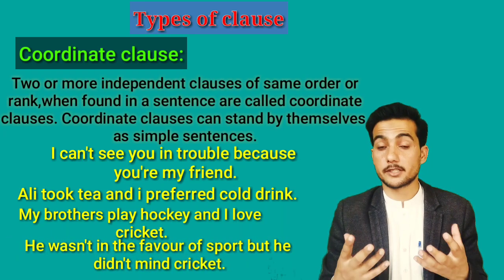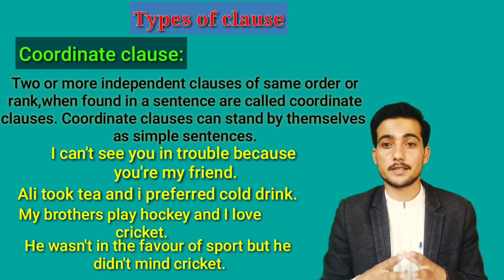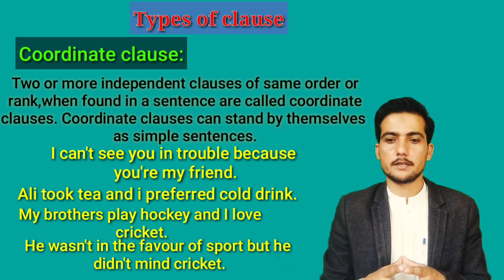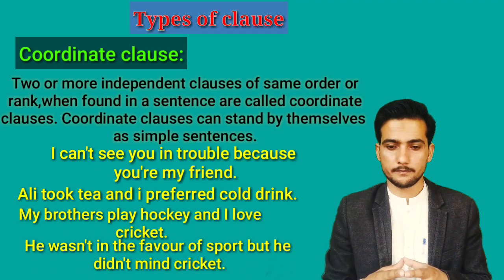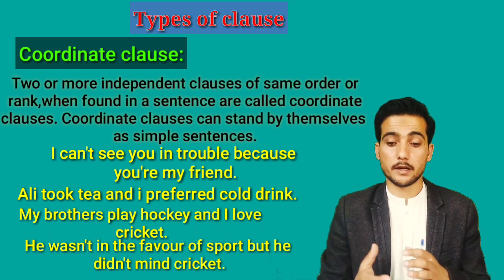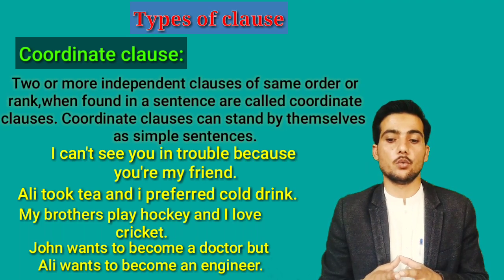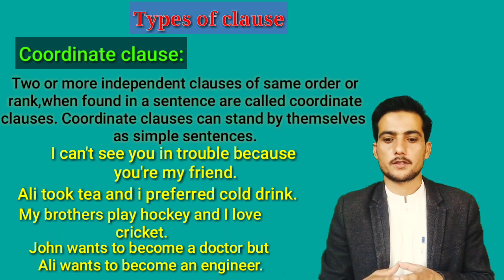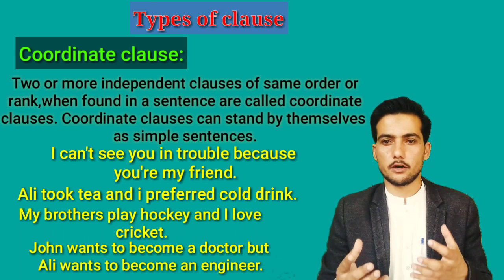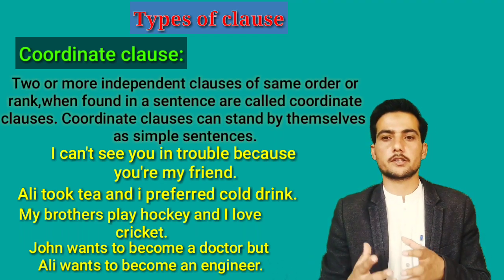'He was not in the power of sport but he did not mind cricket' — 'he was not in power of sport' is the main clause and 'he did not mind cricket' is also the main clause. 'John wants to become a doctor but Ali wants to become an engineer' — this sentence consists of two independent clauses and that is why it is a coordinate clause.